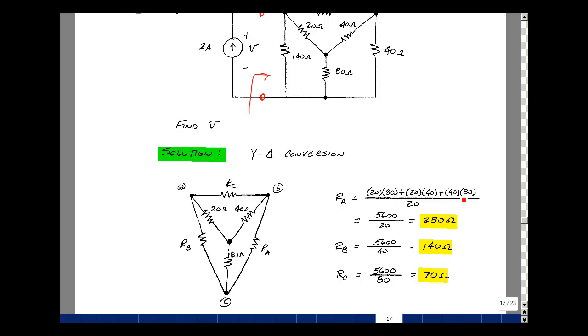Those would be the combinations of the resistances taken two at a time. And then we divide by the resistor that's across from R sub A, that would be the 20 ohms. That turns out to be 280 ohms.